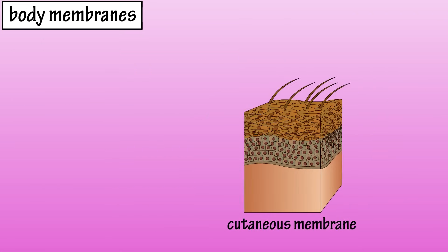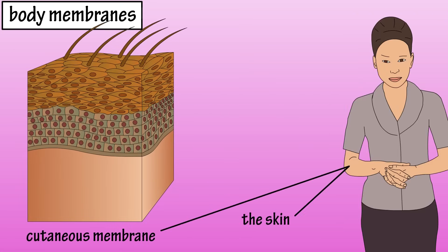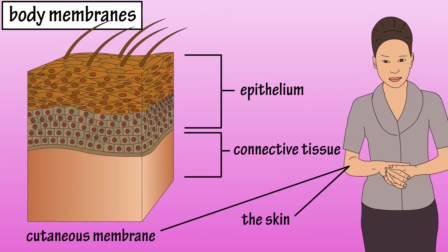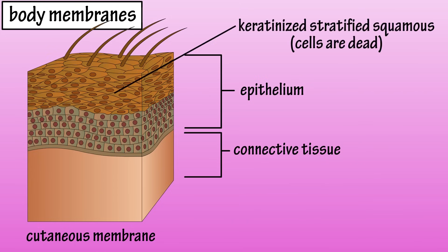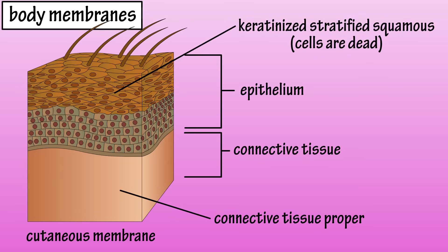Let's start by looking at the cutaneous membrane, which is also known as the skin. It is composed of a top layer of epithelium and a bottom layer of connective tissue. The top epithelial layer is comprised of keratinized stratified squamous epithelium, in which the top superficial layers of cells are dead, and the bottom connective tissue layer is made up of connective tissue proper, which contains many collagen fibers.